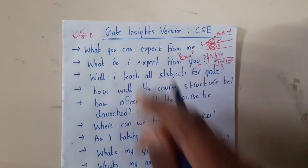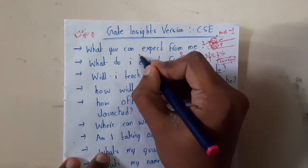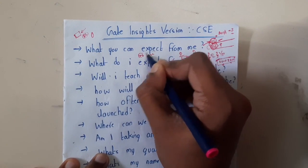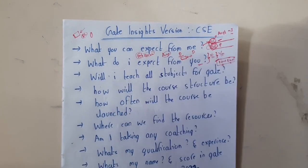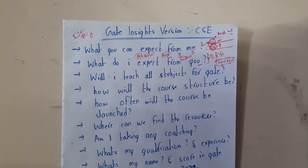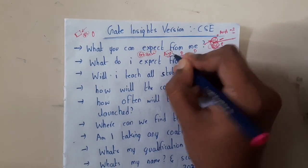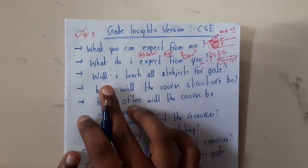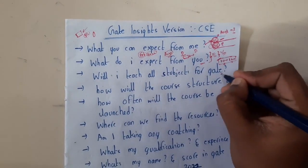GATE is usually in February, so February 2022. We have a lot of time. The course starts from August, and from August to February there are almost seven months, so you can practice thoroughly.